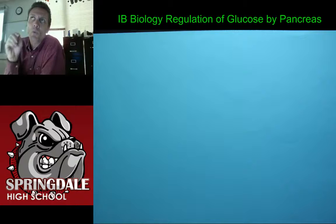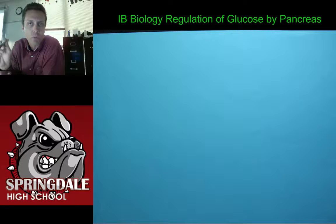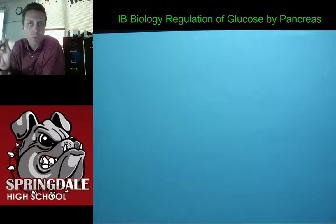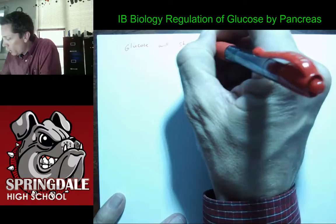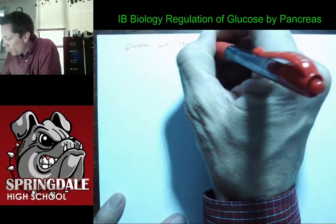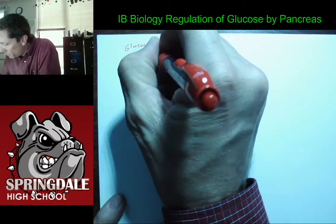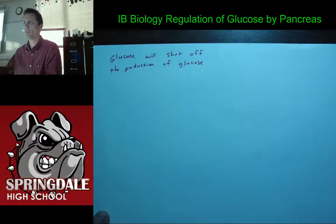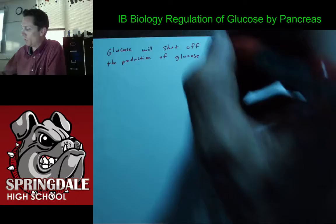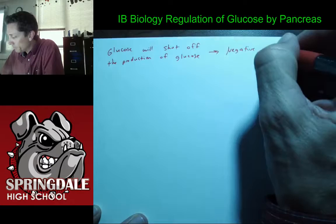We've talked about what feedback inhibition is, and I want to reemphasize: feedback inhibition is when the end product somehow shuts down the process that causes the product. The end product is going to shut off the process that actually makes that product. So if that's true for glucose production, then somehow glucose will shut off the production of glucose in order for it to be negative feedback.